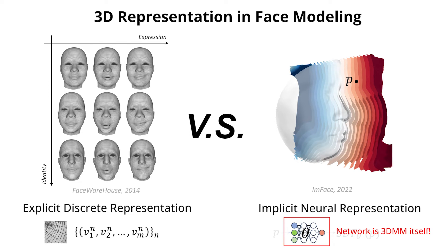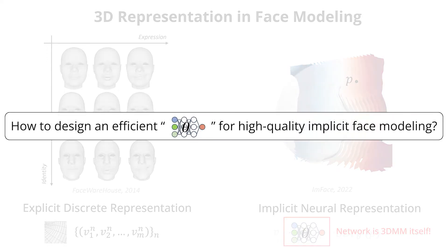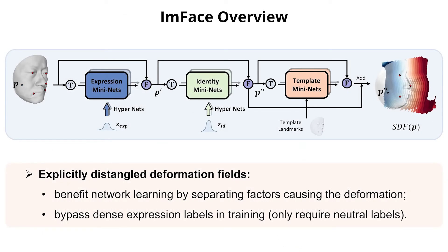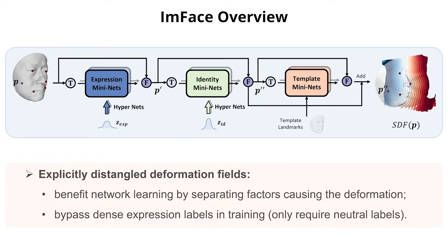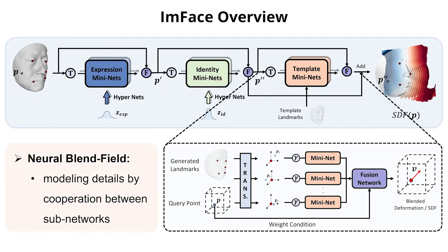Therefore, we aim to tap this potential to advance 3D morphable faces. Since the representation network plays a core role, we ask how to design an efficient implicit neural network for high-quality 3D face modeling. Here we give our solution: ENPHASE is an implicit neural network with multiple designs, including explicitly disentangled deformation fields and neural blend fields, which will be described later.